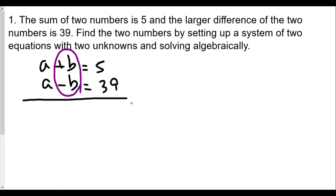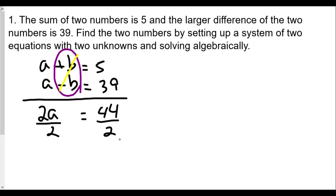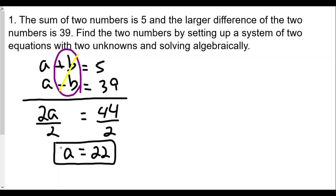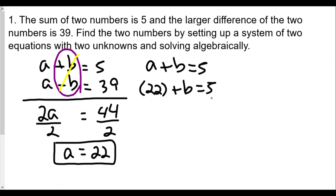We add the two equations: a plus a gives 2a, while b plus negative b equals zero, so they cancel out. Five plus 39 equals 44, so 2a equals 44. Dividing both sides by 2, we get a equals 22. Now we solve for b using the first equation: substituting 22 in for a in a plus b equals 5, we subtract 22 from both sides to get b equals negative 17.